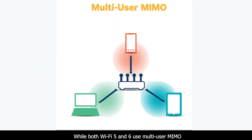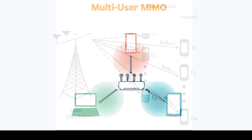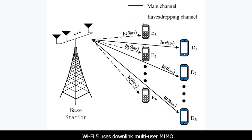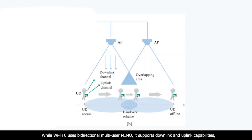Fifth, multi-user MIMO: while both Wi-Fi 5 and Wi-Fi 6 use multi-user MIMO, Wi-Fi 5 uses downlink multi-user MIMO only, while Wi-Fi 6 uses bi-directional multi-user MIMO, supporting both downlink and uplink capabilities, which means simultaneous uploads and downloads and greater speed.